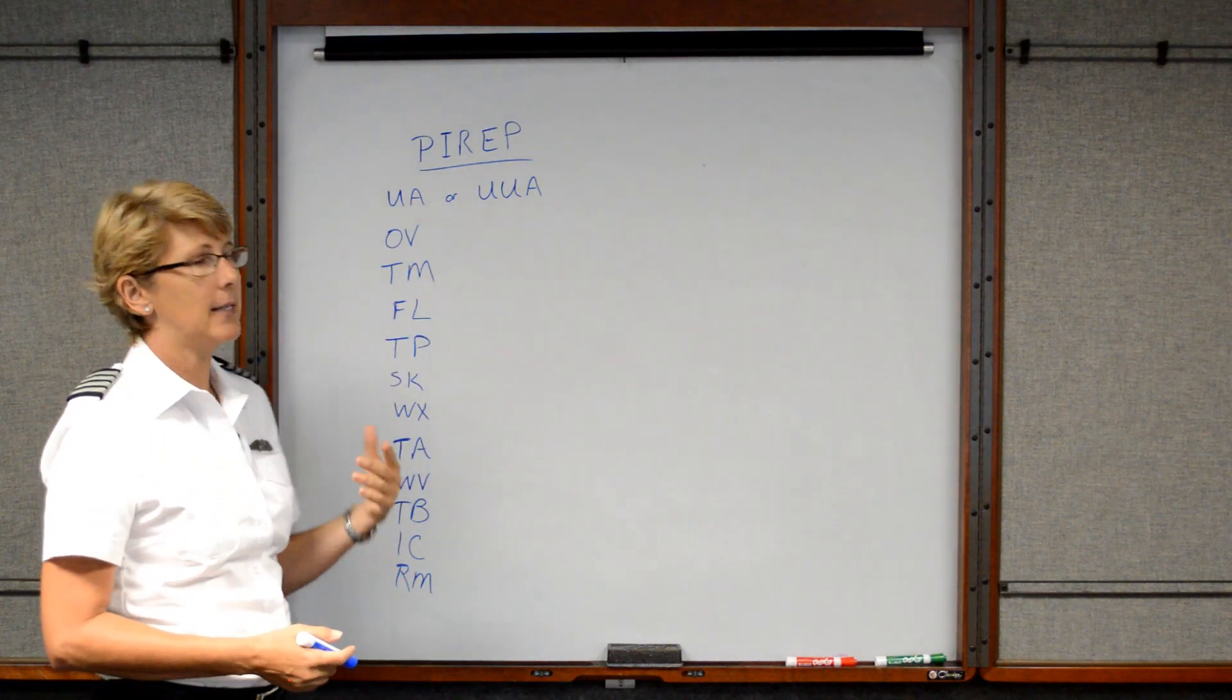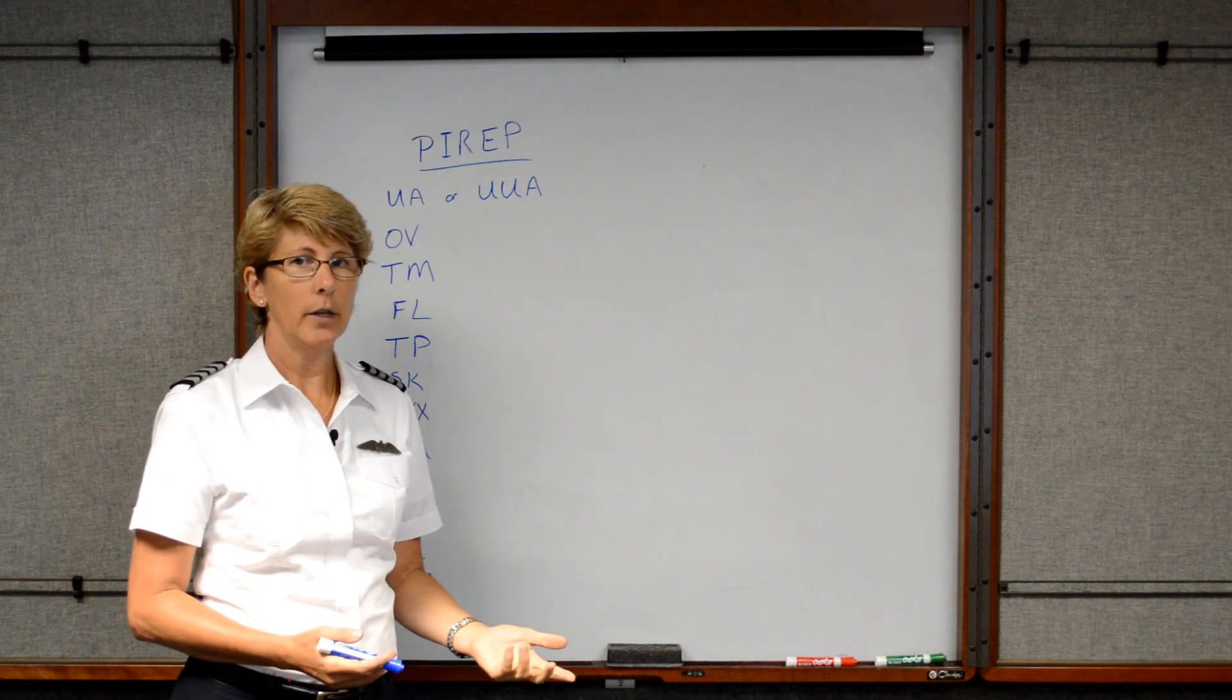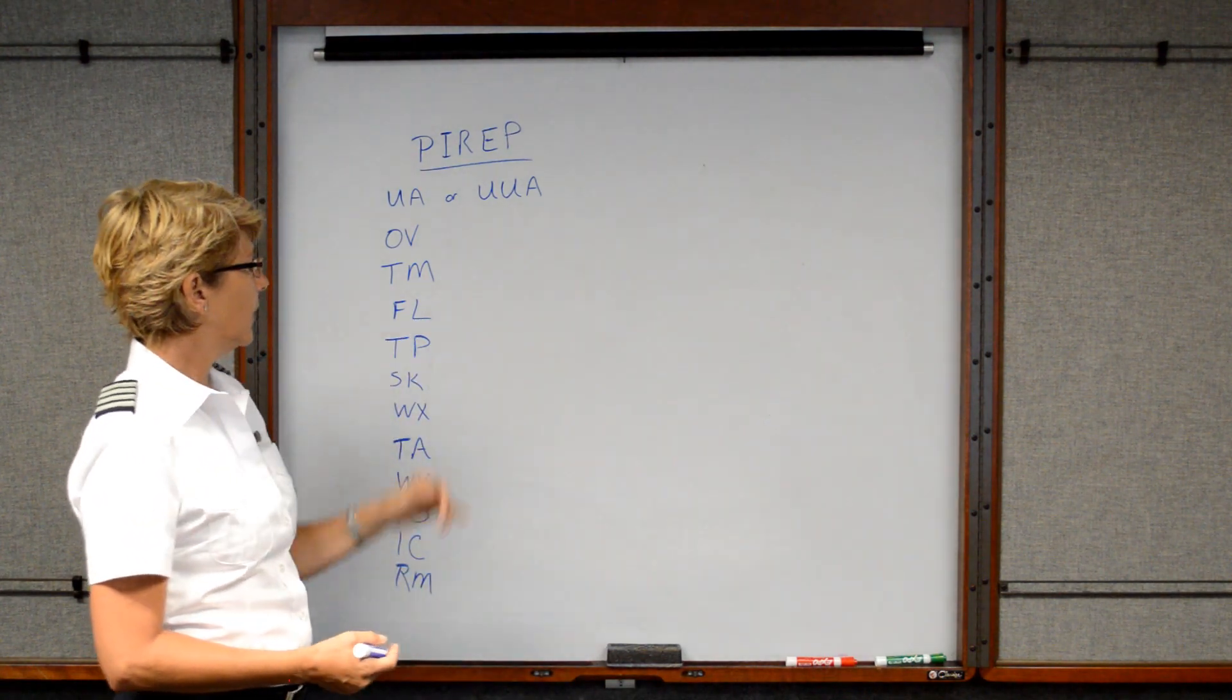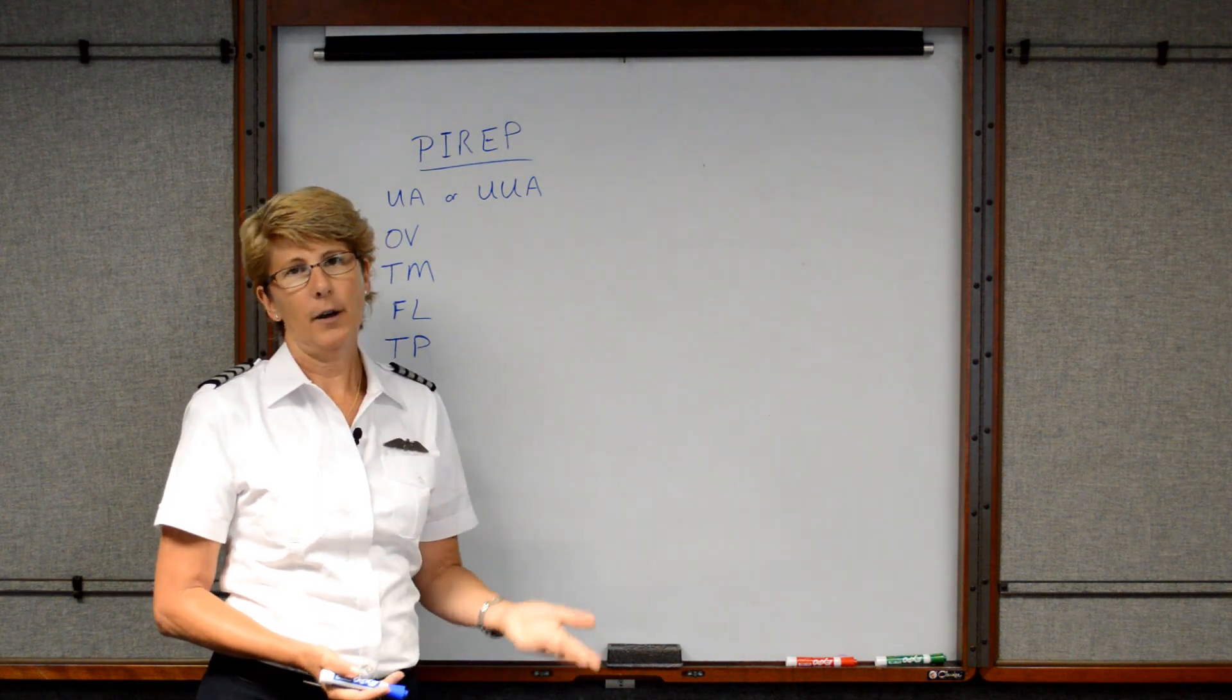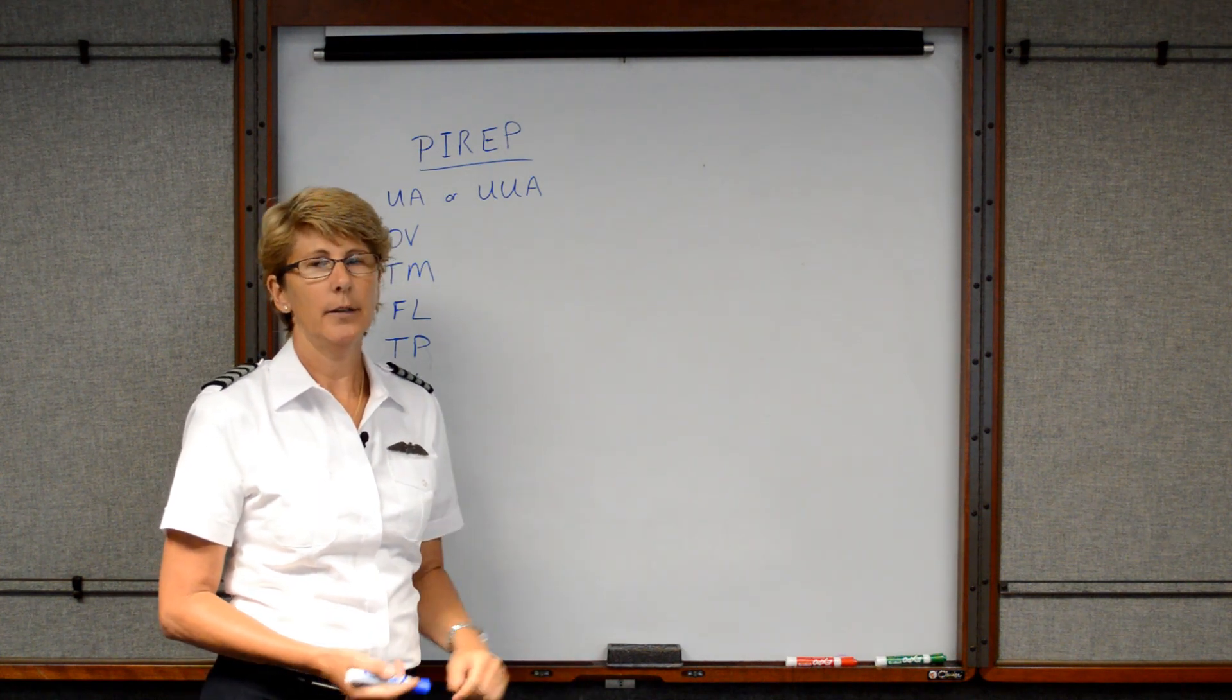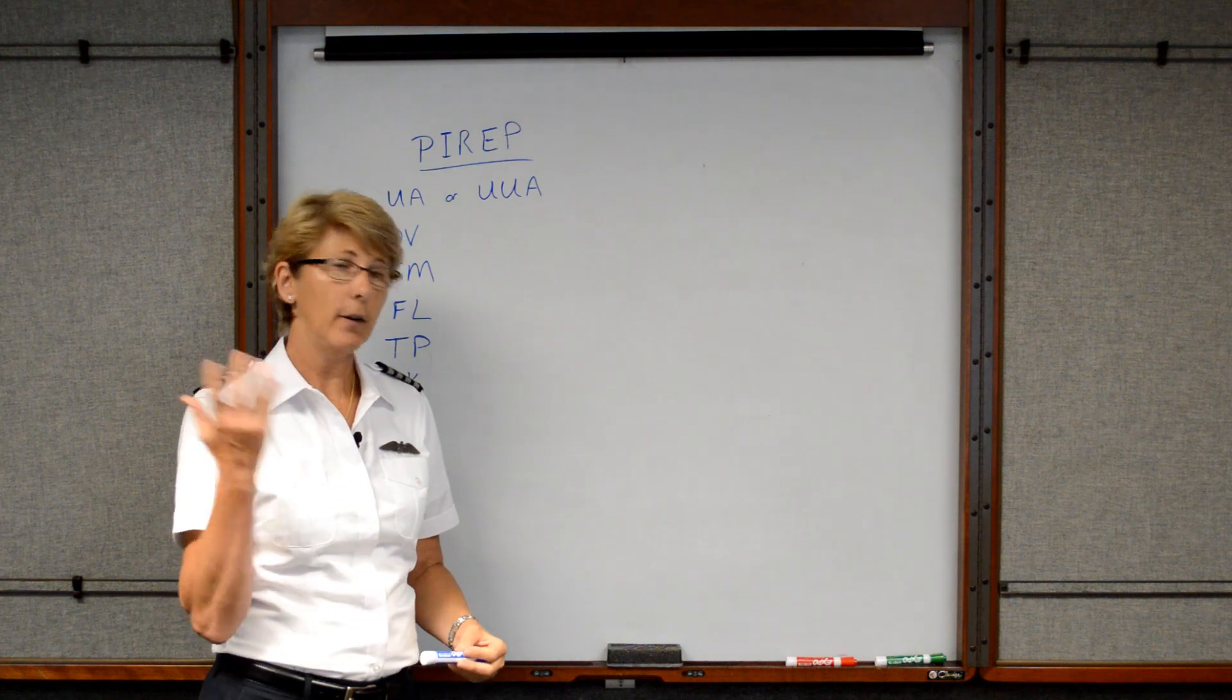TM is the time, so maybe you reported it at 1820 Zulu. And then FL is for the flight level or the altitude you're flying at. So if you're at 5,500, then you let the flight service station know that you're at 5,500.